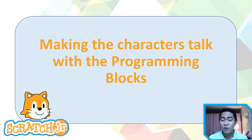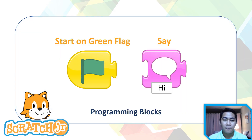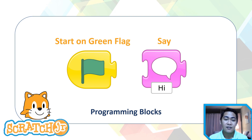Before we proceed to discussing the message blocks, let's have a quick review of the programming blocks. Start on green flag: this block is used at the beginning of the block sequence. By clicking the start on green flag button on top of the screen, the sequence for each character will be activated. Say block: it is used to make the characters talk.